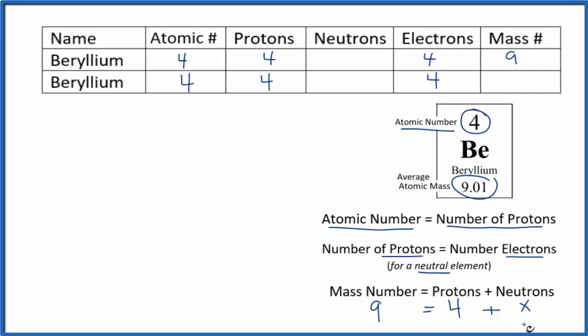We don't know the neutrons, just call it X. So something plus four gives us nine. Five plus four, that'll give us nine. So we have five neutrons for this isotope of beryllium. Because of that, we have a mass number of nine.